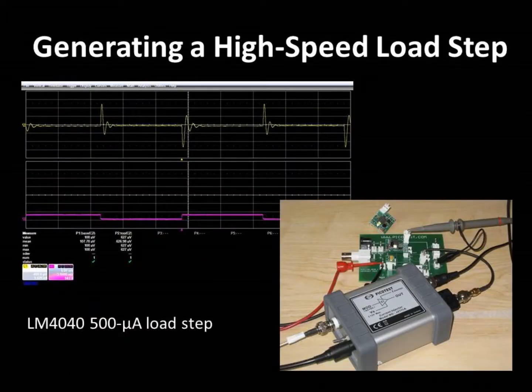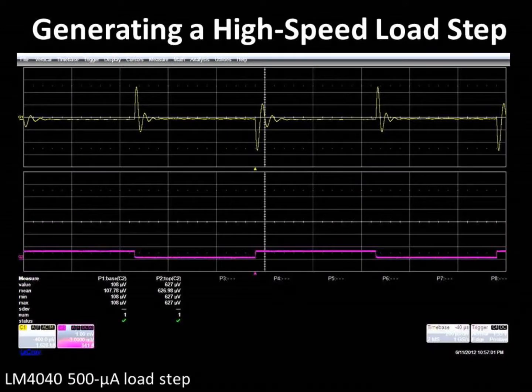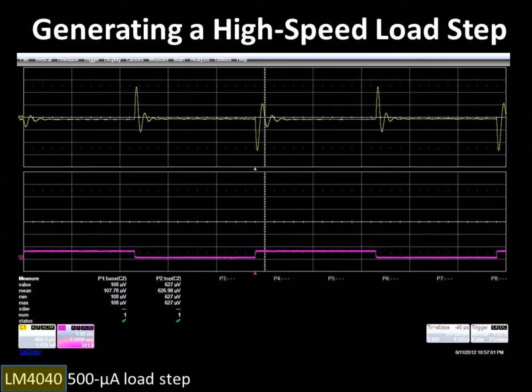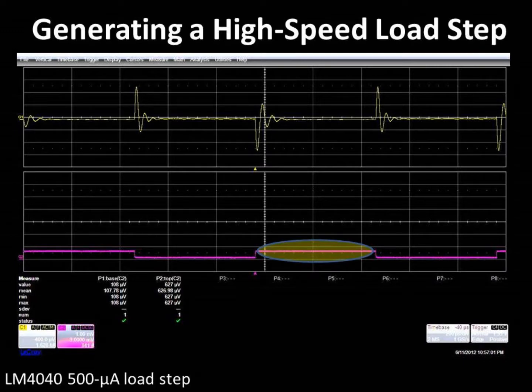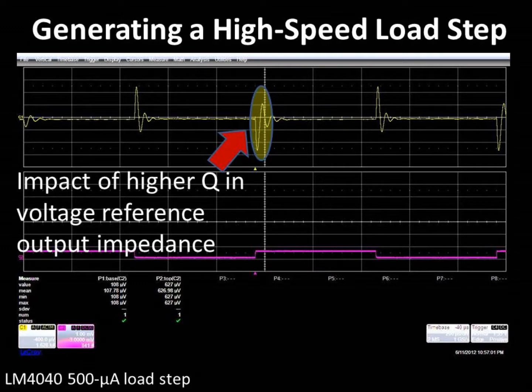The current injector is capable of generating a very high-speed step load, using a function generator or arbitrary waveform generator for modulation, and then using an oscilloscope to record the measurement. The speed of the current injector is an order of magnitude or more faster than a typical electronic load, though operating at much smaller current levels. Here you see a 500 µA current step applied to an LM4040 voltage reference. The frequency shift of the two operating currents is evident. While the load pulse is high, the reference bias current is reduced, resulting in increased effective inductance and therefore a lower crossover frequency and higher Q. The current injector is almost perfectly non-intrusive, while allowing very high-speed edges.